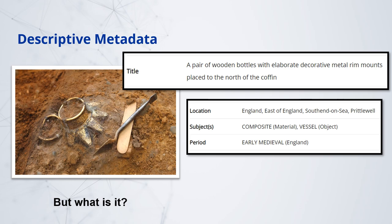So with administrative metadata, we know where the resource came from, how it was made, and how to manage it. With structural metadata, we may know it came from a collection of objects as part of a single deposition from a single event, and we can find related documentation. But what is it? Descriptive metadata can be the tricky one, especially for archivists or those trying to describe the data later. The longer the gap between the creation of an object and the longer the chain of people involved between the creator and the final point of access, the harder it is to describe.